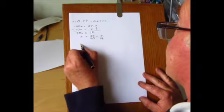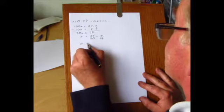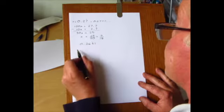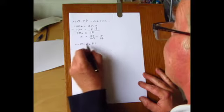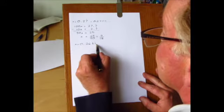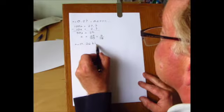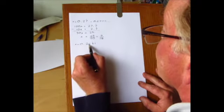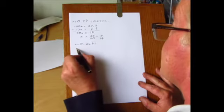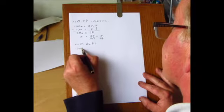A slightly bigger example: 0.2631 recurring. Here we find the end of the pattern after this one, and the decimal point would need to move four places, so we're going to have to multiply X by 10,000.